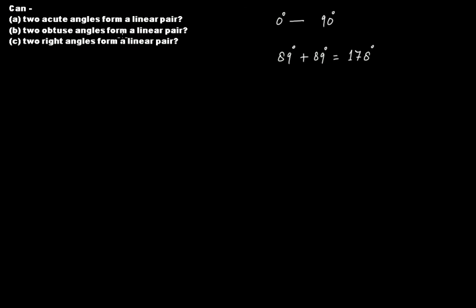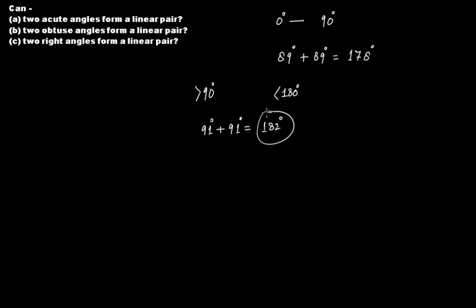Can two obtuse angles form a linear pair? Even if two obtuse angles are adjacent, they can't form a linear pair. An obtuse angle is always greater than 90 degrees and less than 180 degrees. Even taking the smallest possible value of 91 degrees each, 91 plus 91 equals 182 degrees. There is no way two obtuse angles can sum to 180 degrees — their sum will always be greater than 180 degrees because each obtuse angle is already greater than 90 degrees.